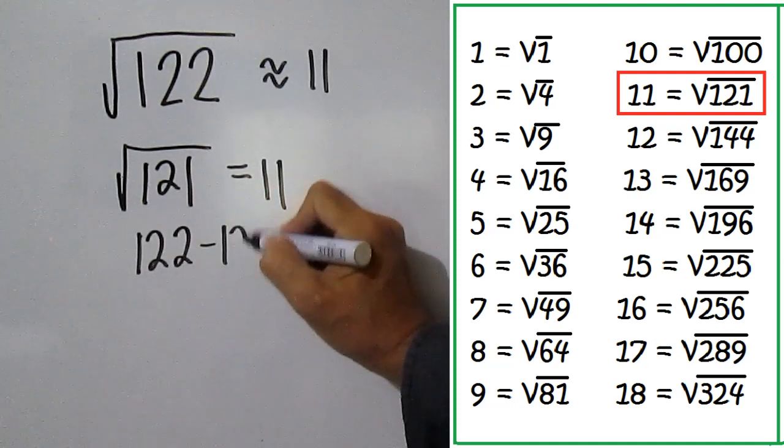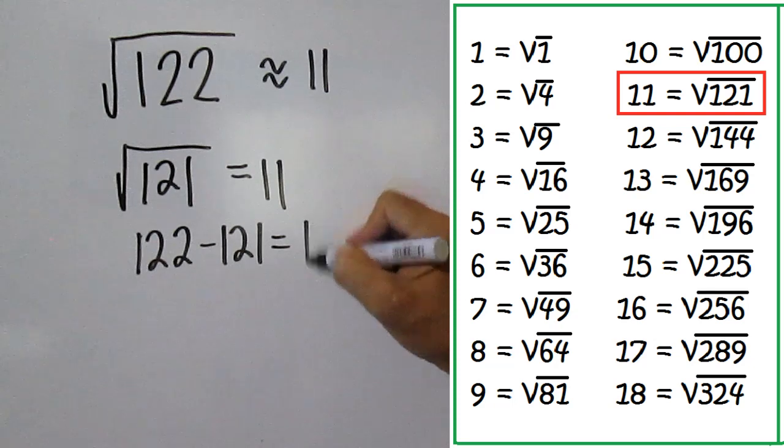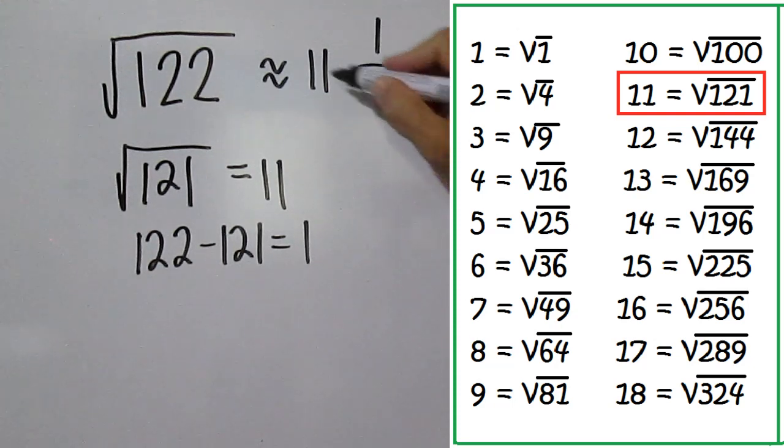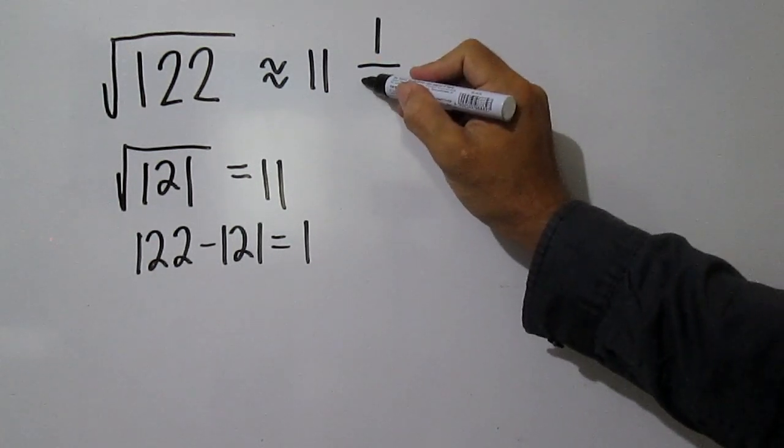122 minus 121 is 1. Double 11. 11 times 2 is 22.